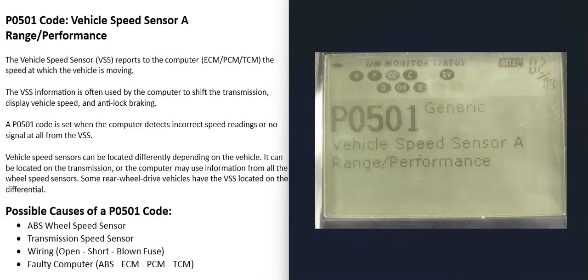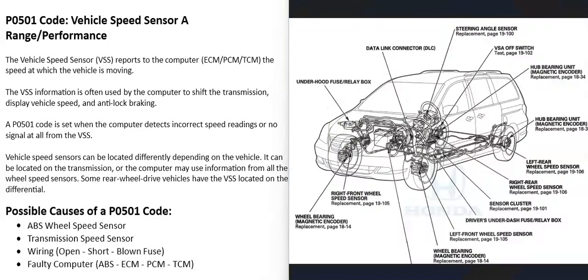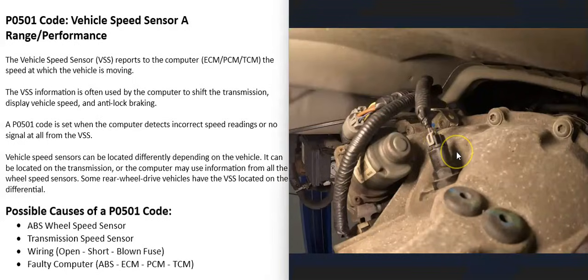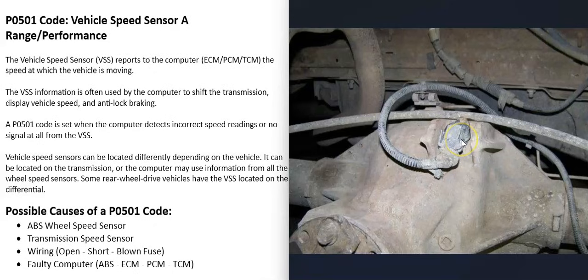The first possible cause of a P0501 code is a bad vehicle speed sensor. The location of this sensor varies depending on the vehicle's year, make, and model. On some vehicles, the wheel speed sensors are located at each tire and the computer uses that information to calculate vehicle speed. Some vehicles have the sensor located on the transmission, and some have it on the rear differential — very common with manufacturers like Ford on the F-150. The first step is to find out how your specific vehicle works.